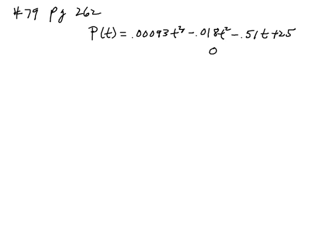And 0 less than or equal to t, less than or equal to 30. And 0 is 1970 all the way up to the year 2000. It says find the interval where P is decreasing and the interval where P is increasing. And to do that, we need to take the derivative.